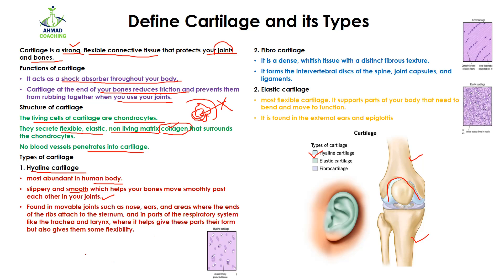Hyaline cartilage is found in movable joints such as the nose, ears, and the area where the ends of the ribs attach to the sternum, and also in parts of the respiratory system like the trachea and larynx, where it helps give these parts their form while also giving them flexibility.